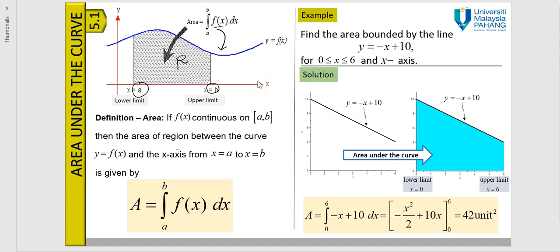For example, let's say you are asked to find the area bounded by the straight line y = -x + 10, for x between 0 and 6, and also the x-axis. Remember how to sketch this straight line — you have a negative slope and a y-intercept of 10 above the x-axis, giving you this straight line. We want to find the area between x = 0 and x = 6, bounded by the x-axis.